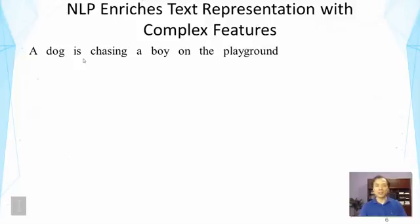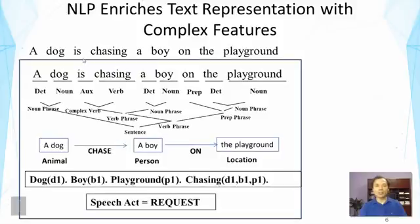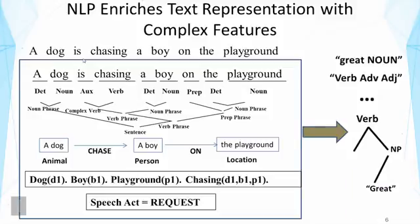NLP enriches text representation significantly. From a simple sentence, we can derive basic word n-gram or character n-gram representations, but with NLP we can enrich the representation with part-of-speech tags, parse trees, named entities, and even speech acts. With this enriched information we can then generate more complex features, such as mixed n-grams of words and POS tags, or even parts of a parse tree.